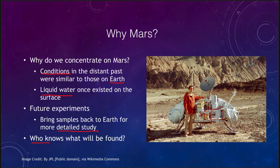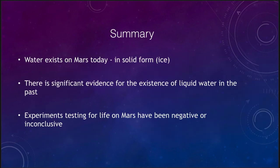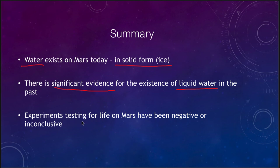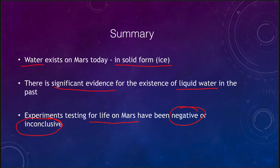In summary: we do know that water exists on Mars today, not in liquid form but in solid form as ice, either in the polar caps or in the permafrost. We do know there is significant evidence for liquid water that existed in the past. We've done a number of experiments looking for life on Mars, and to date they've all been either negative or inconclusive — no evidence that life does exist on Mars. But studies will continue to find better experiments and gain better knowledge. That concludes our lecture on water and life on Mars. We'll be back again next time for another topic in astronomy.